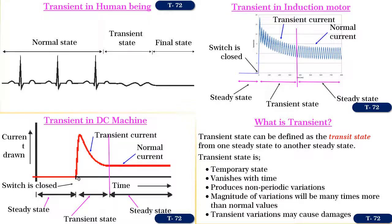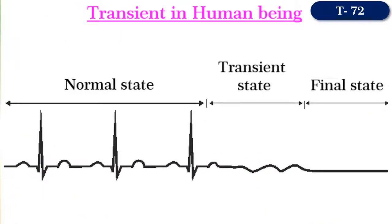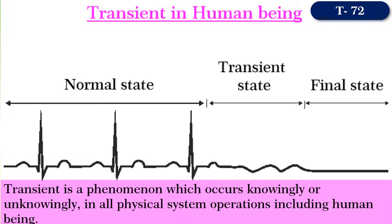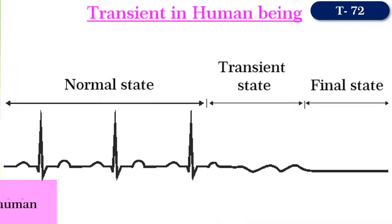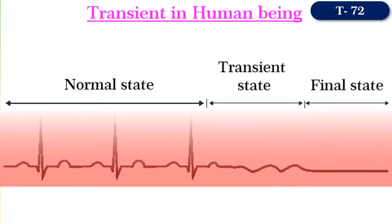Do you know what is a transient? In my opinion, transient is a phenomenon which occurs knowingly or unknowingly in all physical system operations, including human beings. Yes, transients do occur even in human beings. For example, consider an ECG waveform recorded for a human being as shown in the figure.